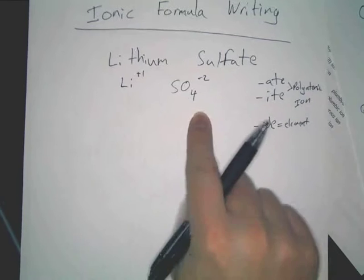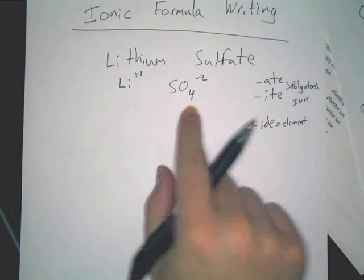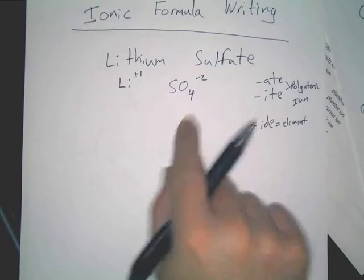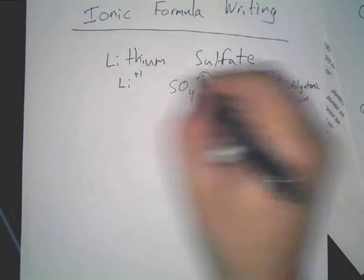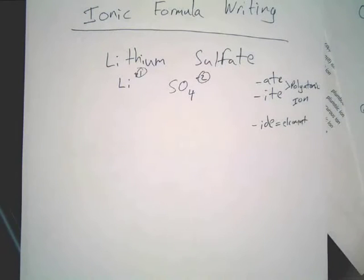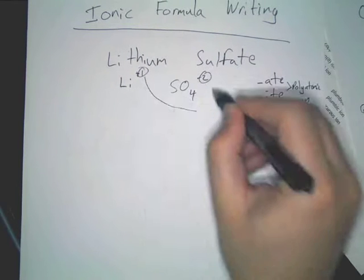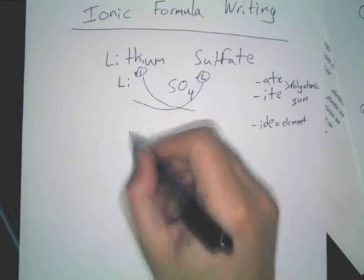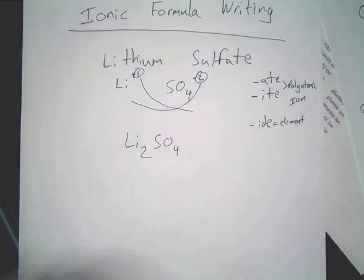Now, at this point, remember what's unique about polyatomic ions. They never split apart. So SO4 is one thing. It will never break apart. And if you were to have more than one of them, you would need to put it in parentheses. However, in this case, you have a 2 here, you have a 1 here, and what you do with the charges, remember, you simply switch them. You bring the 1 down here and the 2 down there. So it becomes Li2SO4.